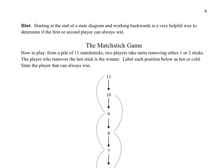Let's look at some examples. The next game we're going to talk about is called the matchstick game. Starting at the end of a state diagram and working backwards is often very helpful to find hot and cold positions and figure out the winning strategy. We have a pile of 11 matchsticks; two players alternate taking either one or two sticks, and the player that removes the last stick is the winner.